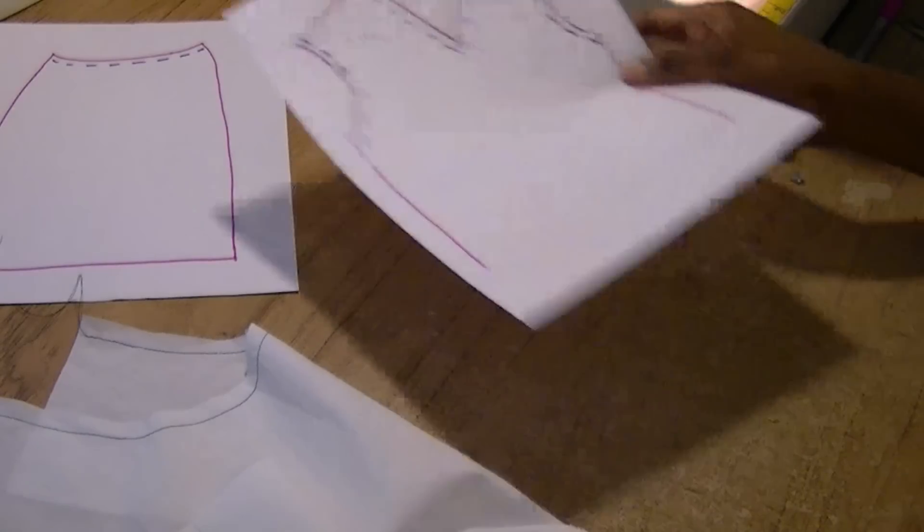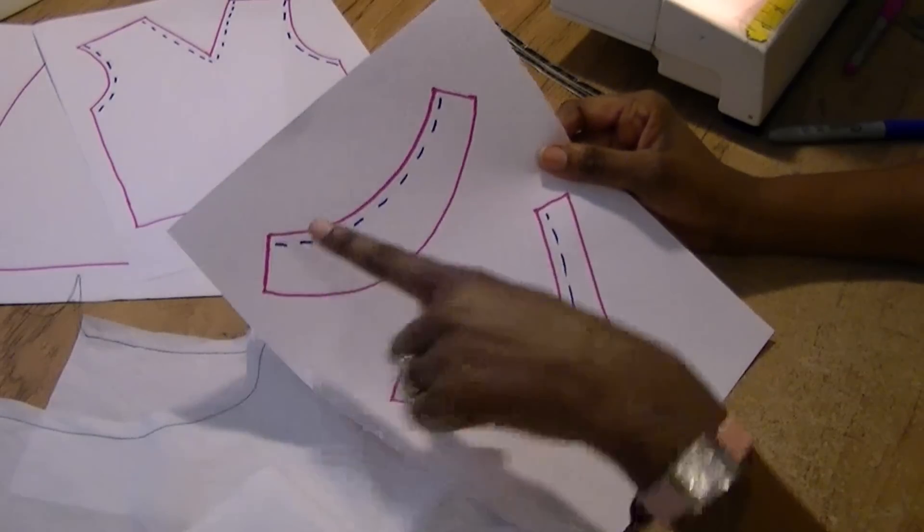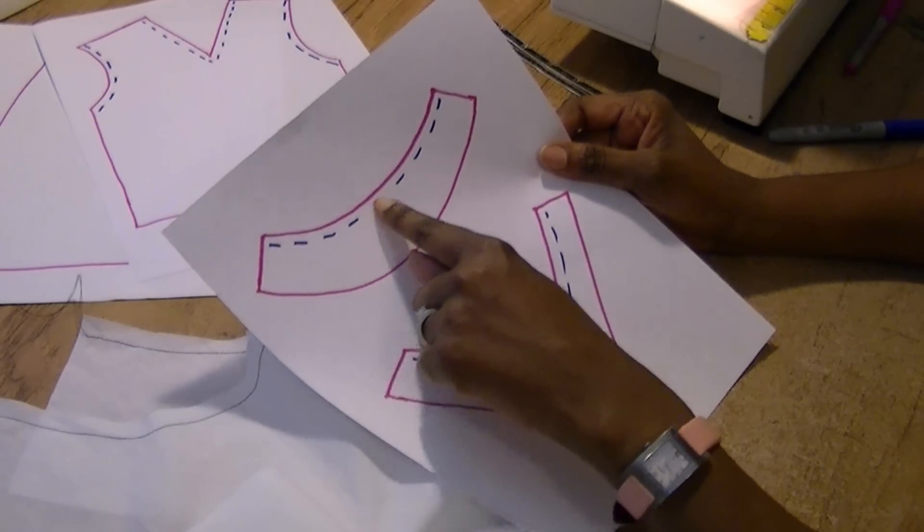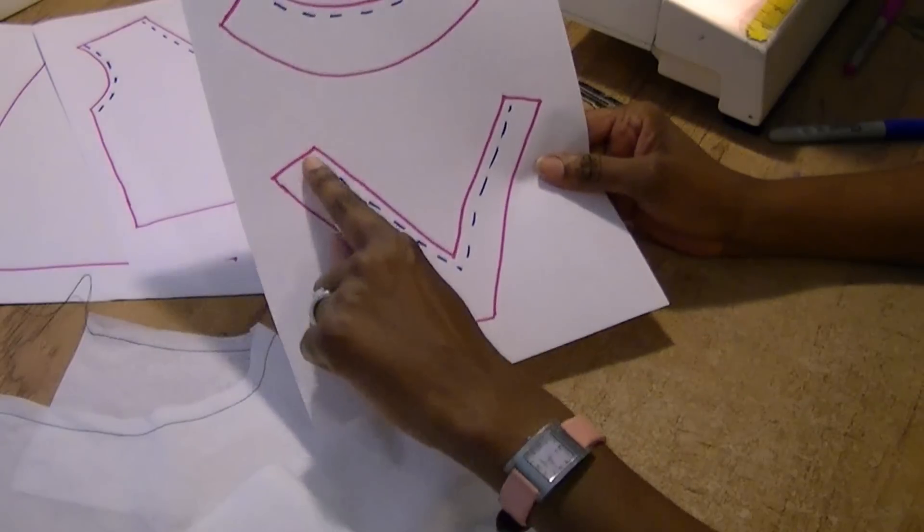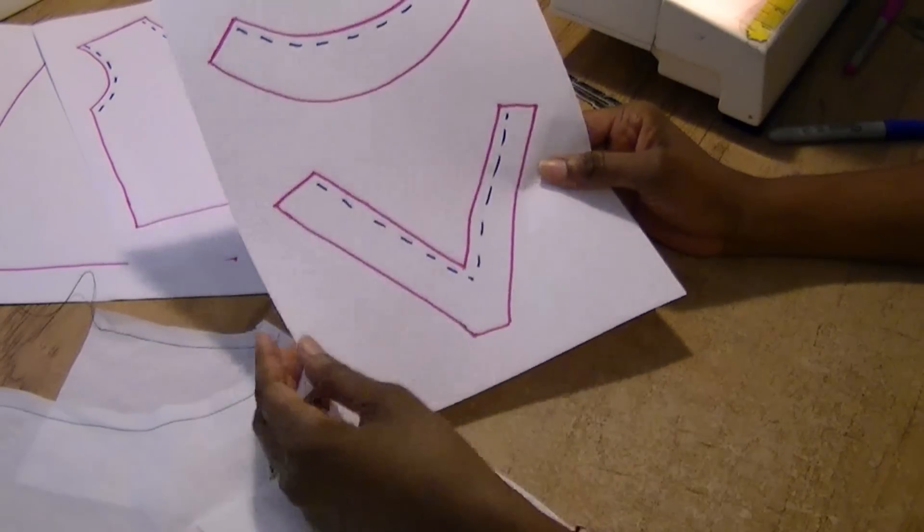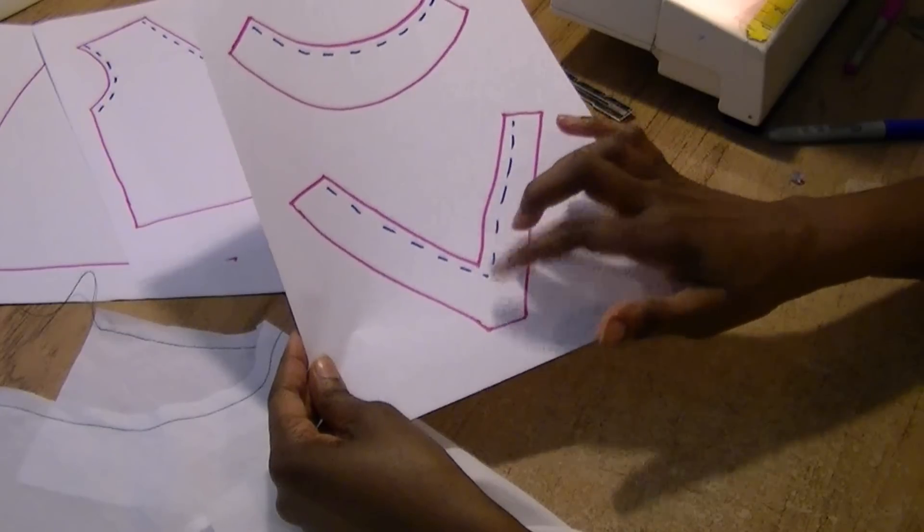And finally, you also want to stay stitch on your facing. So this would be your neck facing, so you want to stay stitch the neck facing as well as if you were doing a v-shape you want to stay stitch the shape of the v of the facing for your top.